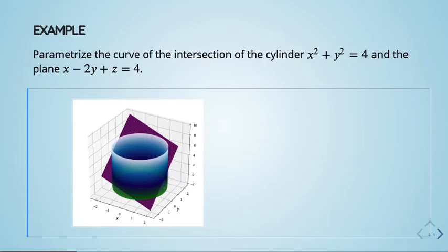The task says parametrize the curve — I just mean write it in the form r(t) equal to some function of t, where the outputs are positions along that curve. Parametrize means come up with the formula for it: the inputs are parameters and the outputs are plotted along that object.